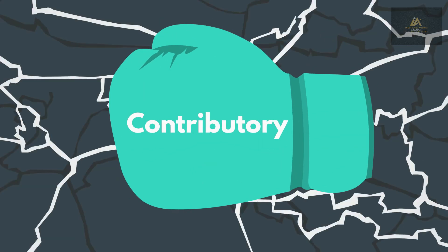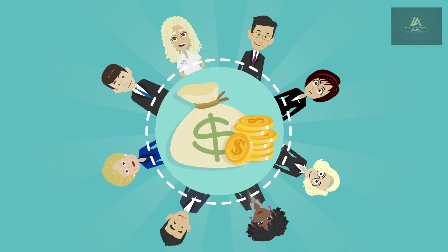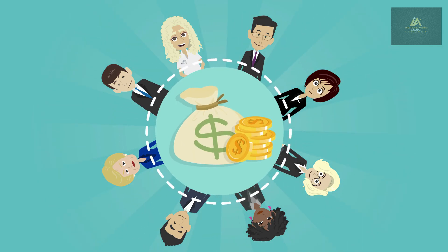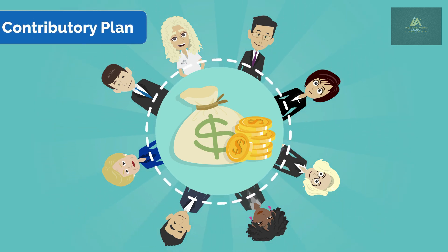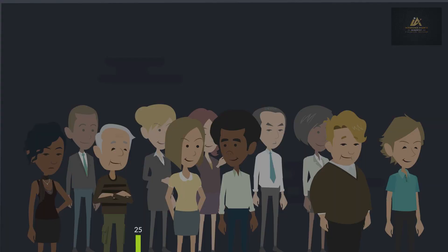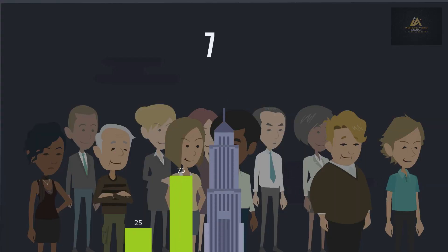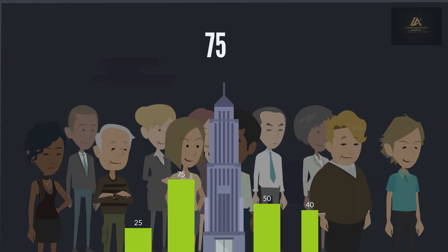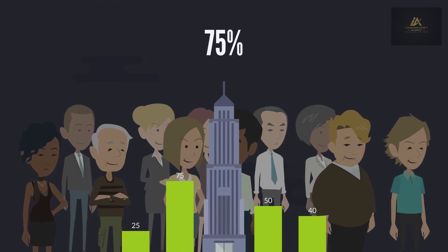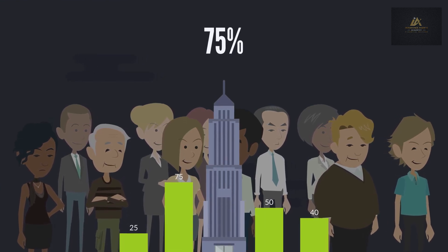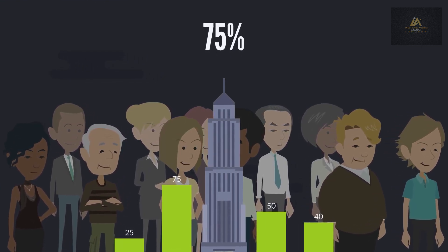Under a contributory plan, the premiums for group insurance are shared between the employer and employees. An insurance company will require that 75% of eligible employees be included in the plan.